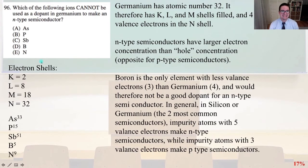Which of the following ions cannot be used as a dopant in germanium to make an n-type semiconductor? Germanium has an atomic number of 32, it therefore has KL and M shells filled, and four valence electrons in the n shell. So n-type semiconductors have larger electron concentration than hole concentration, which is the opposite for p-type semiconductors. So boron is the only element with less valence electrons, 3, than germanium, and would therefore not be a good dopant for an n-type semiconductor. In general, in silicon or germanium, which are the two most common semiconductors, impurity atoms with 5 valence electrons make n-type semiconductors, while impurity atoms with 3 valence electrons make p-type semiconductors. So therefore, our answer is D, boron.